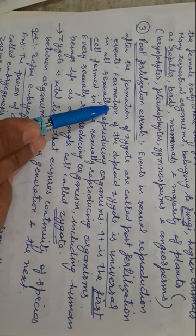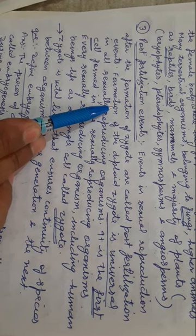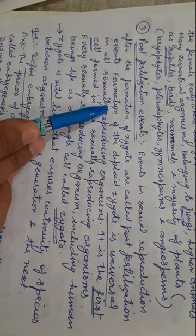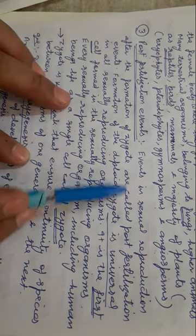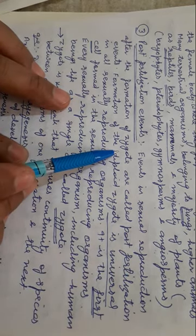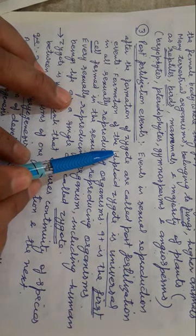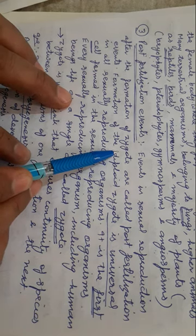Sexual reproduction can be divided into three events: pre-fertilization events — we have studied gametogenesis and transfer of gametes — and now post-fertilization events. Events in sexual reproduction after the formation of the zygote are called post-fertilization events.